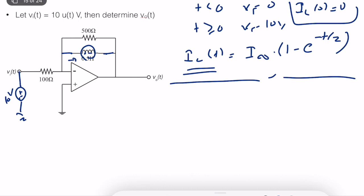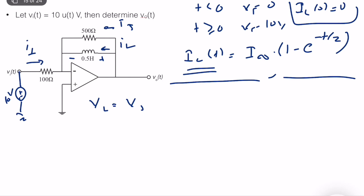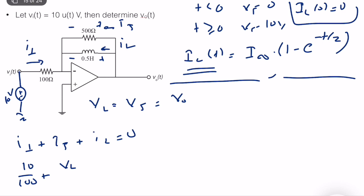Instead, I will find an ODE with respect to the inductor current, from which it is fairly easy to extract the time constant. Labeling the currents as I1, I5, and IL, we note that the inductor voltage V_L equals V_5 (voltage across the resistor) and equals V_0. Writing KCL: I1 plus I5 plus IL equals 0. I1 equals 10 divided by 100, I5 equals V_L divided by 500, and IL is just IL, which equals 0.